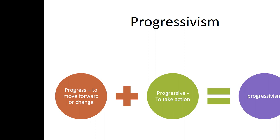When you think about what the Progressive Movement stood for, you think about the term progressivism. The root word is progress, which means to move forward or change. To be progressive is to take action. So progressivism is essentially to take action and change something. The reason we titled this era the Progressive Era is that this is America making efforts to improve people's circumstances as a result of industrialization and urbanization.